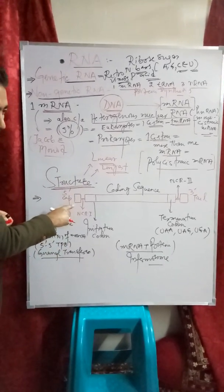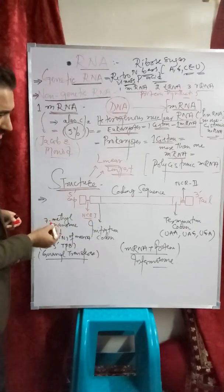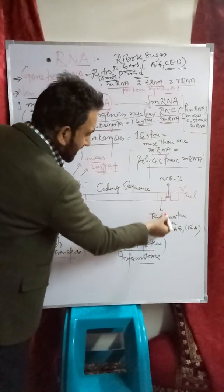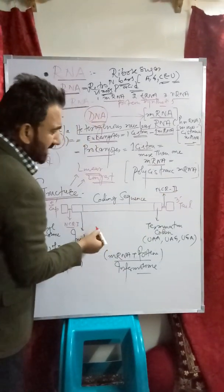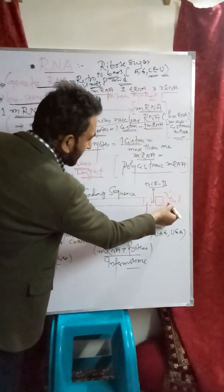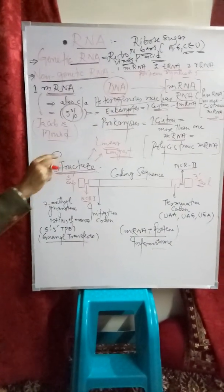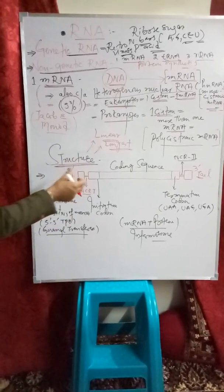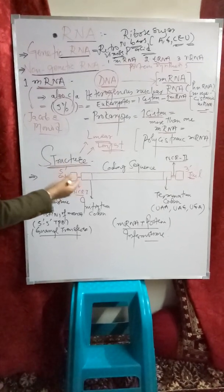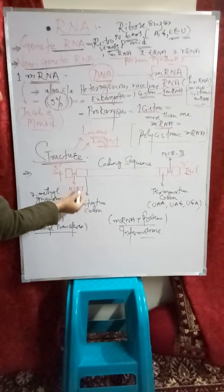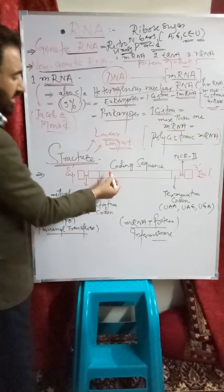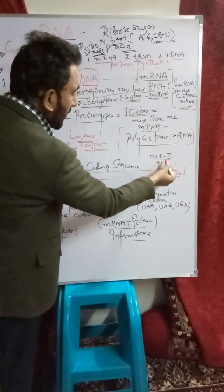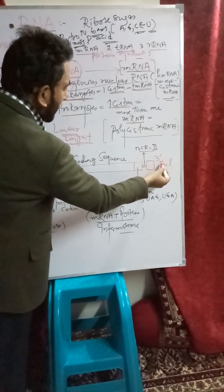The mRNA structure consists of: a 5' cap at the 5' end, followed by non-coding region one, then the initiation codon, followed by the coding sequence, then the termination codon, then non-coding region two, and finally a 3' tail at the 3' end.